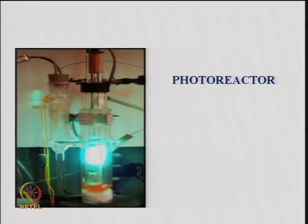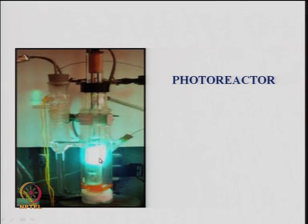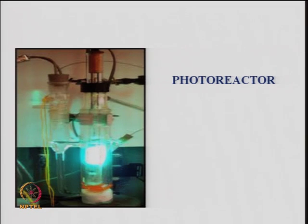To summarize: when light shines on the photocatalyst, electrons go one way and holes go the other way. You want to stop the electron-hole recombination on the surface to make an efficient photocatalyst. With that, this lecture ends, and we will have one more lecture on photocatalysis in the next session. Thank you.